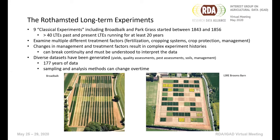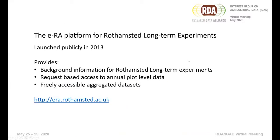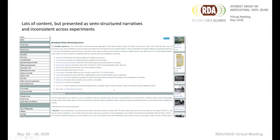This fear of misrepresentation of data is something that's traditionally held us back from making the data available. But in our case, some of the data is available. In 2013, we launched what we call the ERA platform, which makes a lot of the background information for the experiments available, and we also have some annual plot level data available on a request-based system, as well as aggregated datasets which are freely available. However, the content is often in semi-structured narratives, inconsistent across experiments, and in a range of different formats — HTML, PDFs, and Excel.